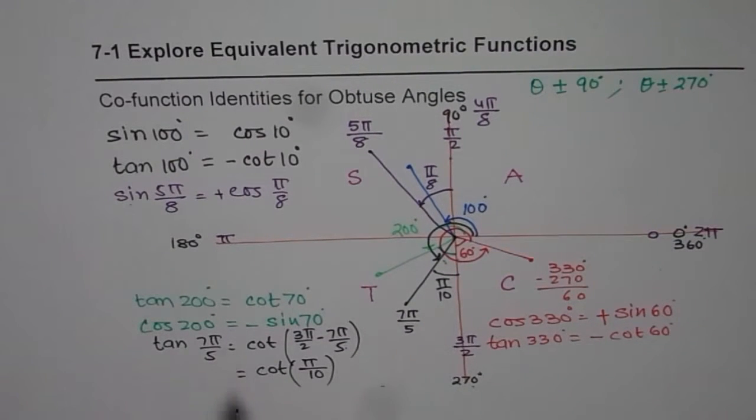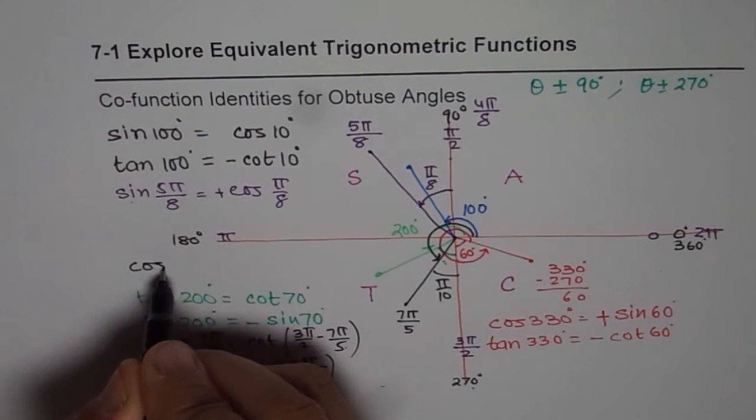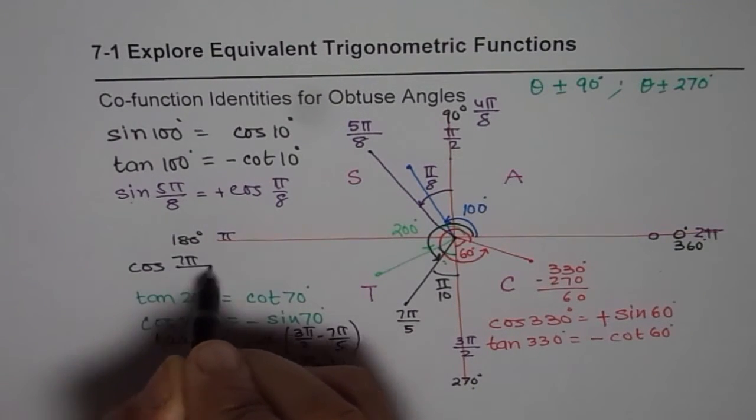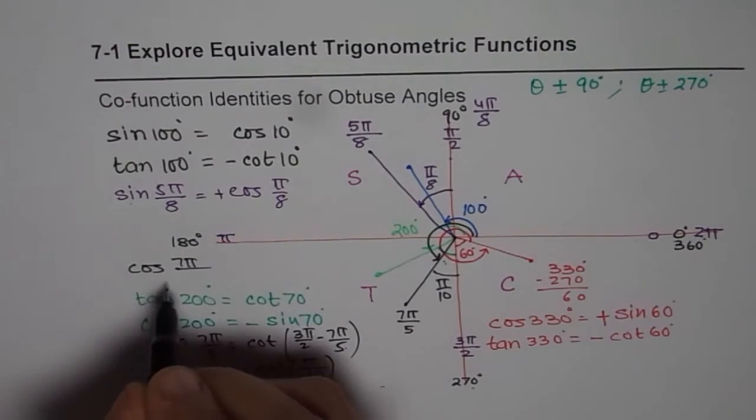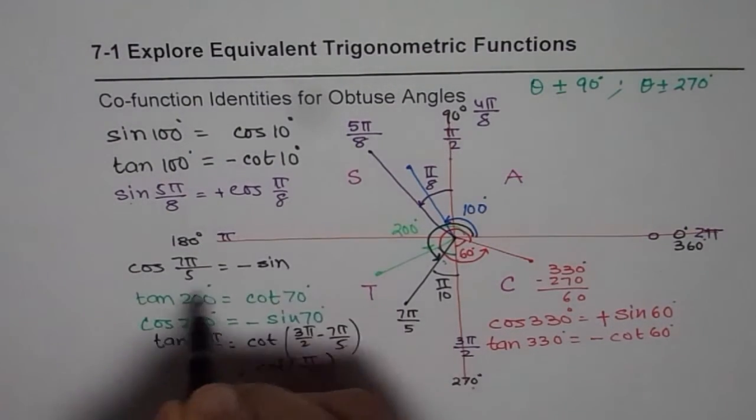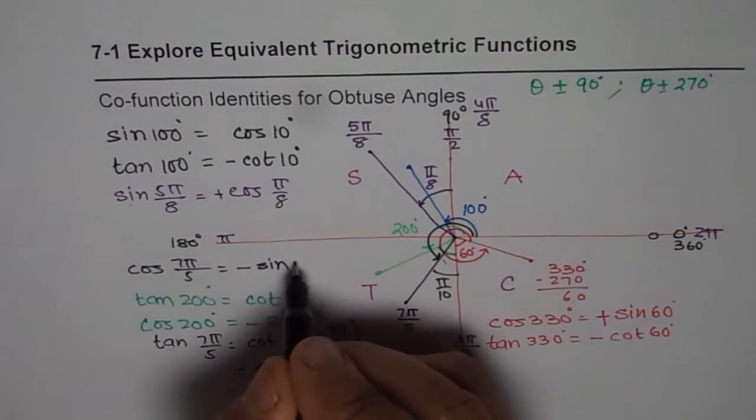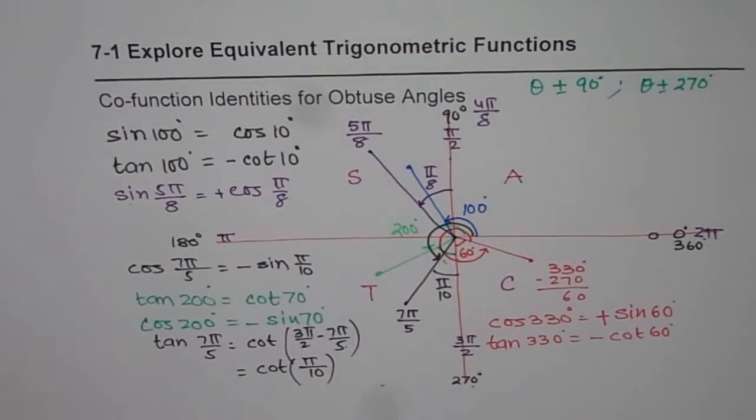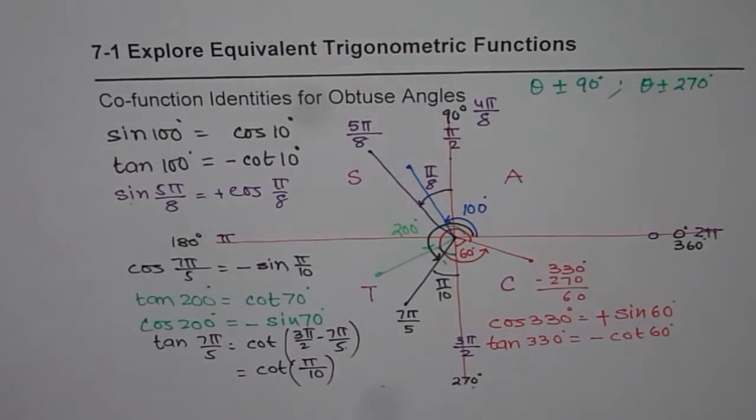And therefore, we can write tan of 7 pi by 5 as cot of pi by 10. Do you see? If you have, however, cos of 7 pi by 5, okay, that could be written as minus sign because cos is negative here and the same angle, pi by 10. Do you get the idea? So that is how we can actually do it in radians, okay?